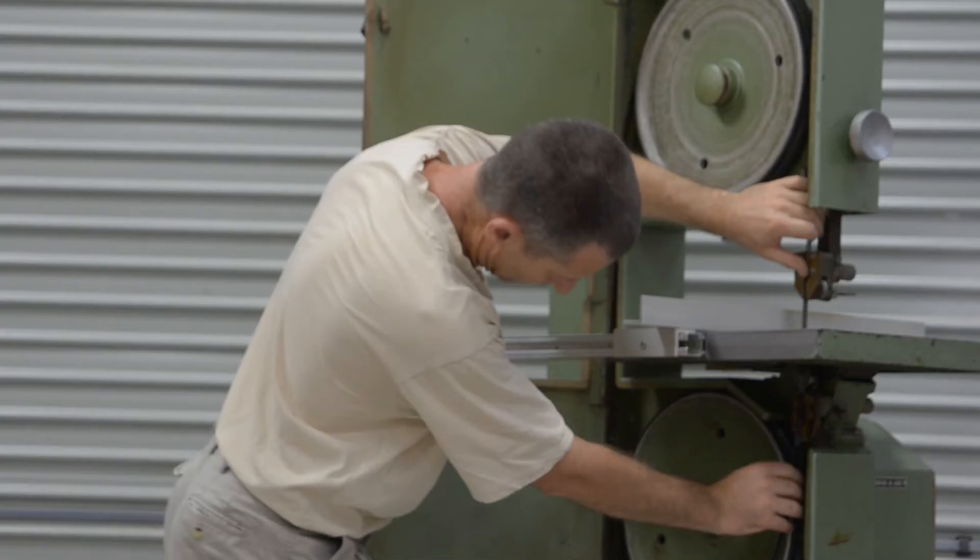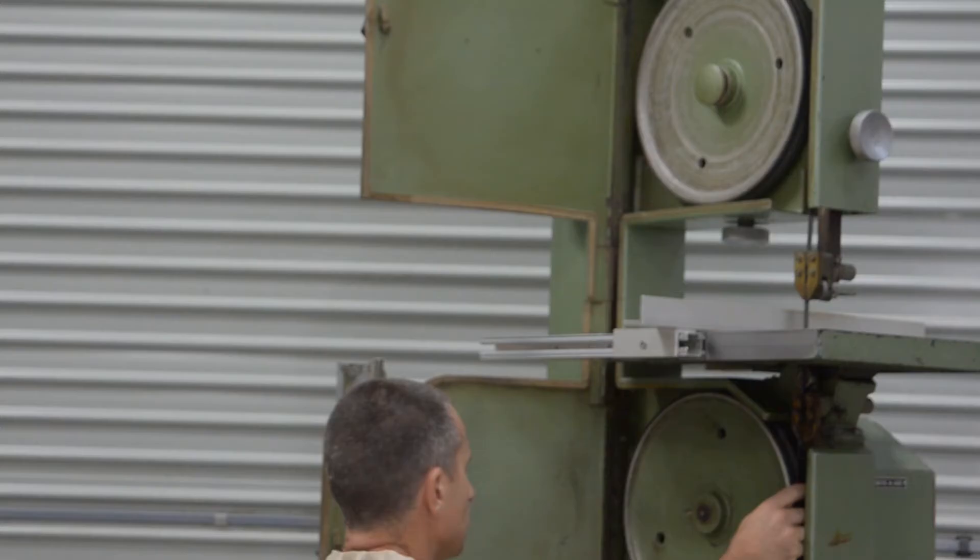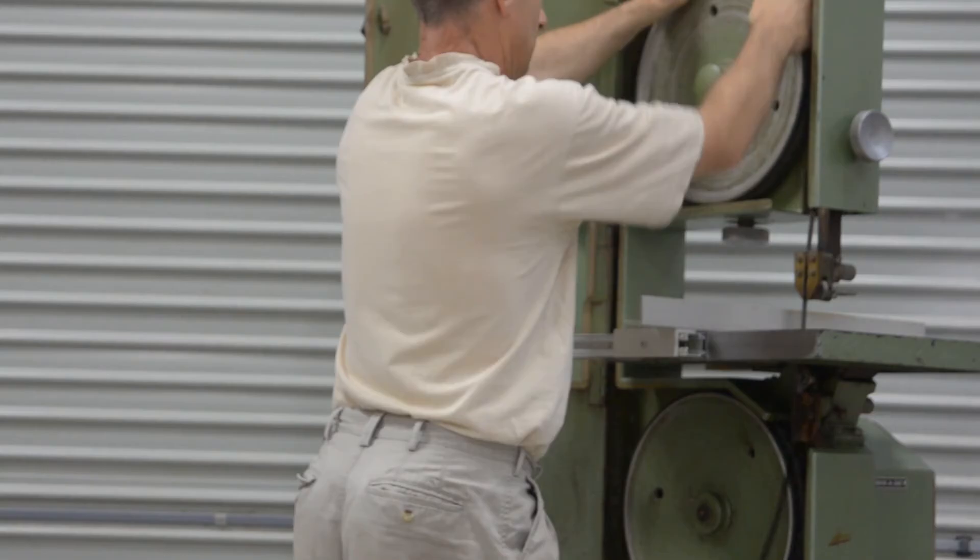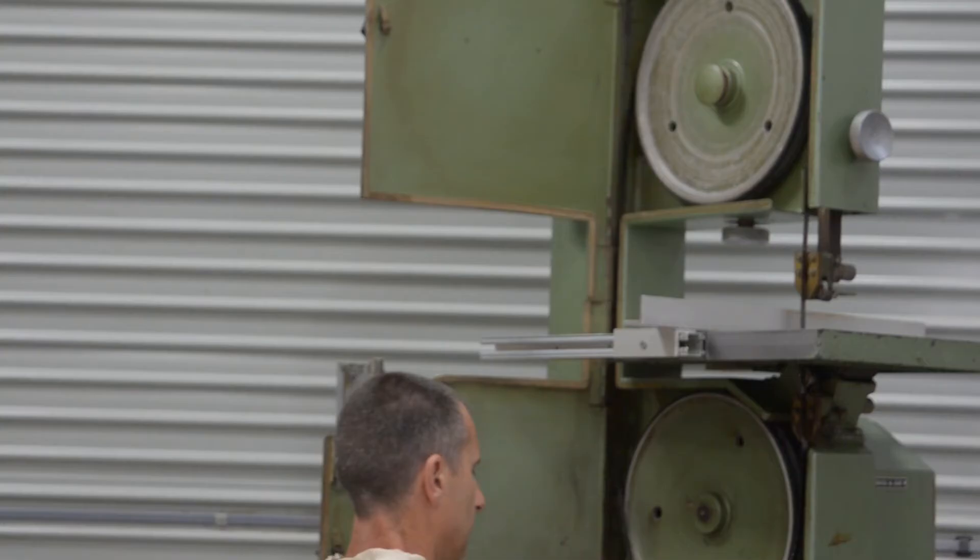When you put the blade in, you want to make sure the teeth are pointing downward for cutting on the downward pass. Every time you change the blade, the tracking behaviour will probably be a little bit different. And certainly between blades, there will be a difference in the tracking because of the way the welds work and any tensions that may be in the metal of when they made the blade.